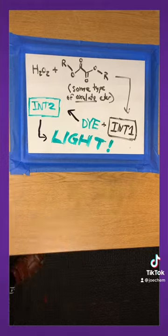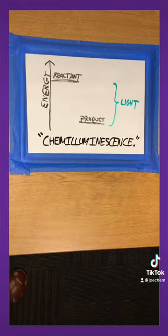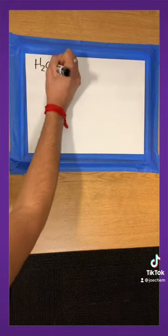it releases its excess energy in the form of light. While there are different esters that are used in these chemiluminescence reactions, the one thing that's constant is the hydrogen peroxide.